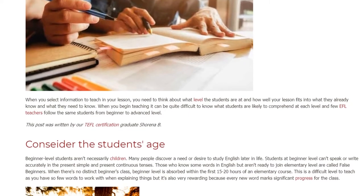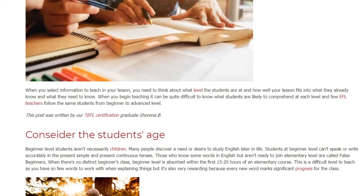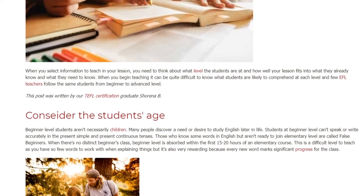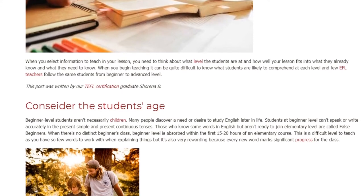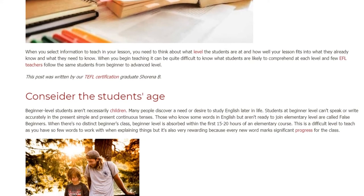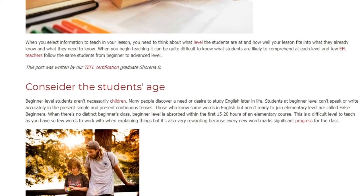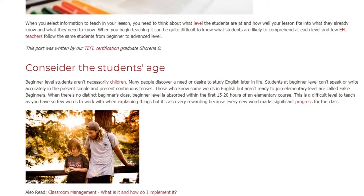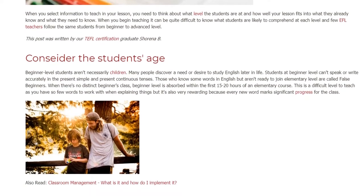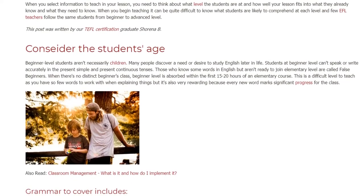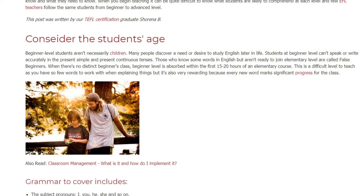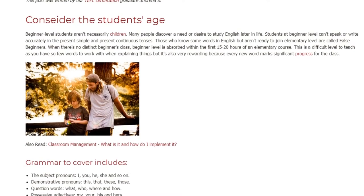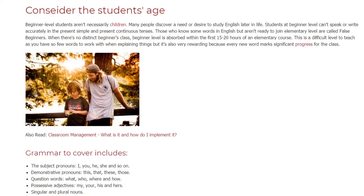Consider the student's age. Beginner level students aren't necessarily children. Many people discover a need or desire to study English later in life. Students at beginner level can't speak or write accurately in the present simple and present continuous tenses. Those who know some words in English but aren't ready to join elementary level are called false beginners. When there's no distinct beginners class, beginner level is absorbed within the first 15-20 hours of an elementary course. This is a difficult level to teach as you have so few words to work with when explaining things, but it's also very rewarding because every new word marks significant progress for the class.